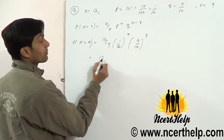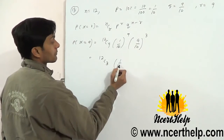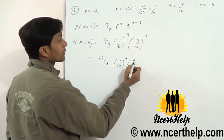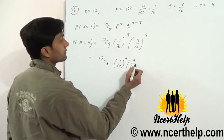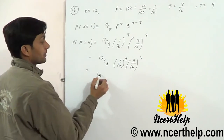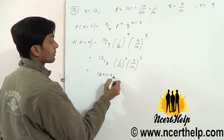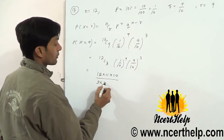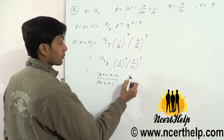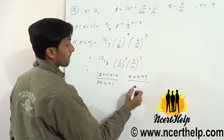12C9 equals 12C3. Computing 12C3: 12 × 11 × 10 divided by 3 × 2 × 1. And 9^3 gives 9 × 9 × 9.